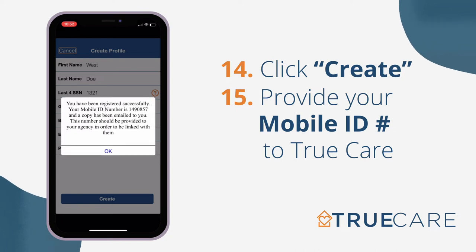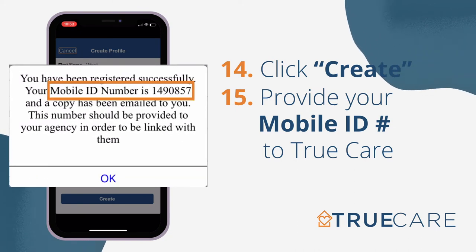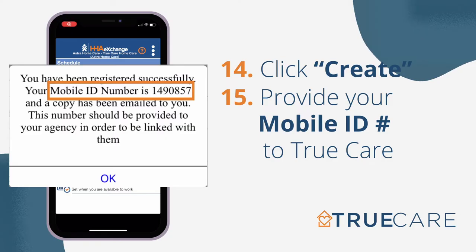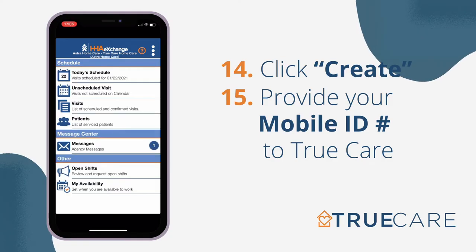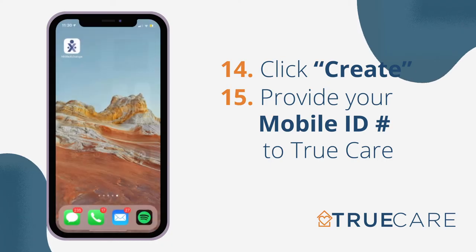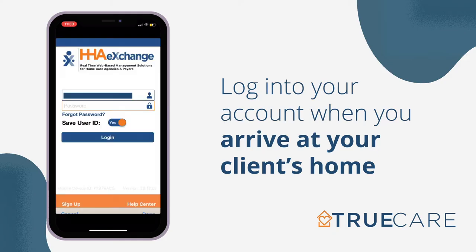Once your login and profile information are set up, the mobile ID associated with your account will be sent to your email. Please provide your mobile ID to our compliance department so they can link your schedule to your account. You can also find your mobile ID in the menu under your name. You will need to log out and log back in to your account to reset it after it has been linked. After your account is linked, you are now ready to use the HHA Exchange app to clock in and clock out.